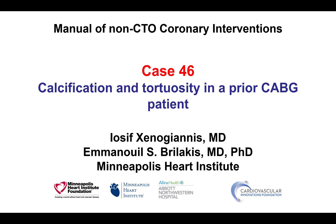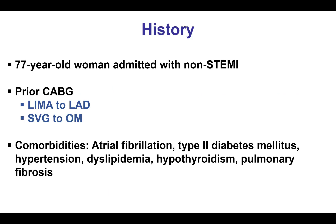This is a case of calcification and tortuosity in a patient with previous coronary bypass grafting. The patient was an elderly woman who presented with a non-ST elevation myocardial infarction. She had previous coronary bypass graft surgery with LIMA to LAD and a vein graft to the obtuse marginal branch, and multiple comorbidities.